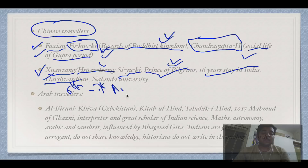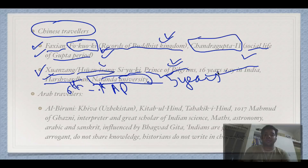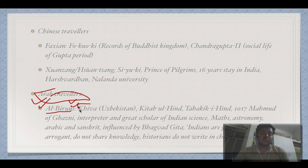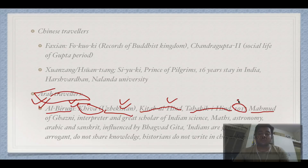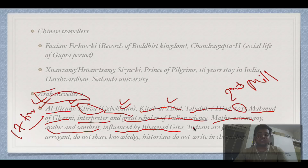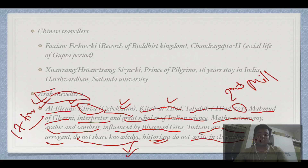Xuanzang stayed at Nalanda University for five years, which is why the Japanese and Chinese governments are funding the development of Nalanda University today. Among Arab travelers, Al-Biruni was from Khiva, Uzbekistan. He wrote Kitabul Hind, also called Tahqiq-e-Hind. He came in 1017, at the turn of the second millennium — the 11th century — along with Mahmud of Ghazni. Al-Biruni was a great scholar of Indian science, mathematics, astronomy, Arabic, and Sanskrit. He was influenced by the Bhagavad Gita. Key exam points: he stated that Indians are geniuses but arrogant because they do not share their knowledge, and that Indian historians do not write in chronological order.